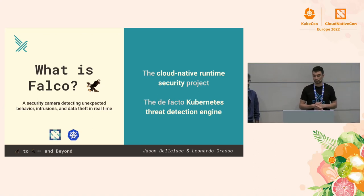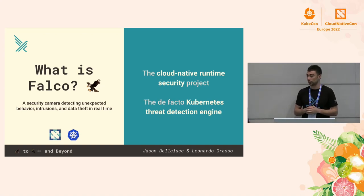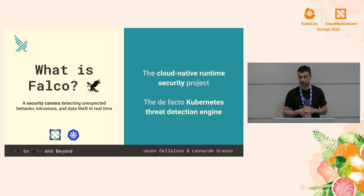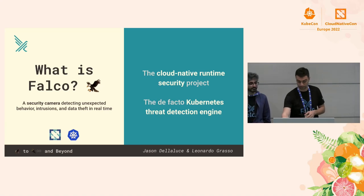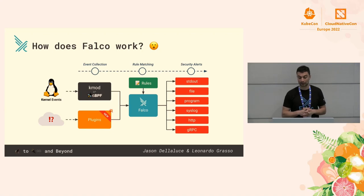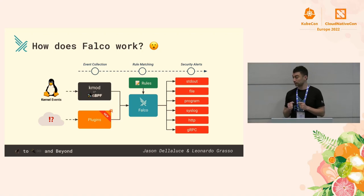Maybe you are familiar with Falco, or maybe it's the first time you heard about it, so I'm going to give a brief review for everyone. Falco is a cloud native runtime security tool that monitors everything that happens in your system and sends security alerts whenever something suspicious or a cyber attack is detected. Falco is easy to deploy and configure, and catches cyber attacks right in the moment they happen so that you can take immediate action. Data flows only in one direction and is not retained or stored. Everything happens in real time following the activity of your system.